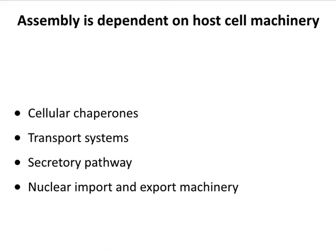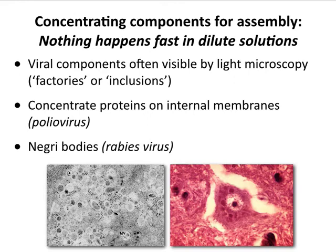The assembly part of infection requires chaperones — cellular proteins that help viral proteins fold properly. Transport systems are really important; viral subunits move from one part of the cell to another using transport systems. The secretory pathway is a big component of bringing glycoproteins to the right place and moving components around. Many DNA viruses replicate their genomes in the nucleus, so you need import and export machinery as well — many reasons why the cell is really important for virus assembly.